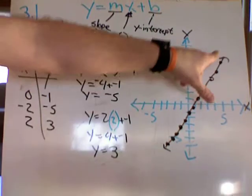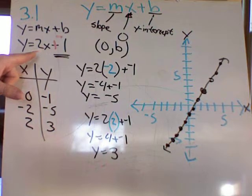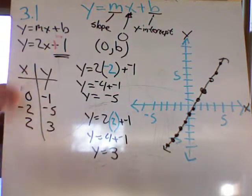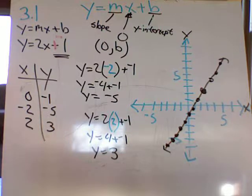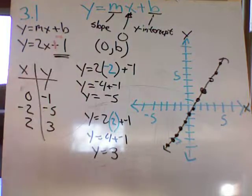Now, what are these little arrows here for? Why do I keep putting those arrows? That means it goes on forever. Because if we look at this, I could pick anything for x. I could put x is a million, x is a thousand, x is negative 20 billion. When I figure out what y is, it's still going to fall on this line no matter where we are.